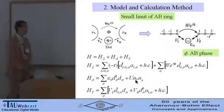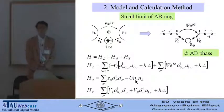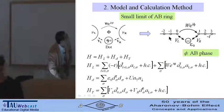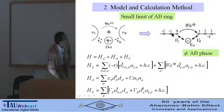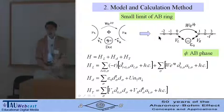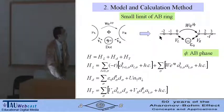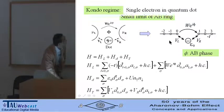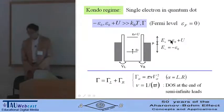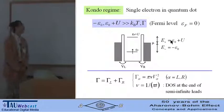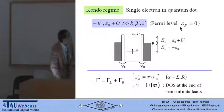This is our model. Our model is almost the same as Hofstadter's model. Two leads are represented by a one-dimensional tight binding model. We are interested in the Kondo region where a single electron is localized in the quantum dot.